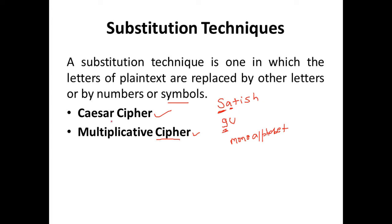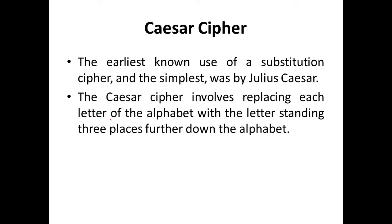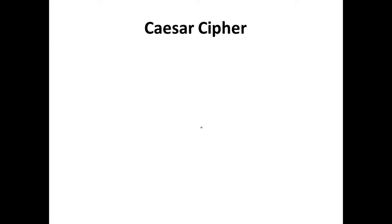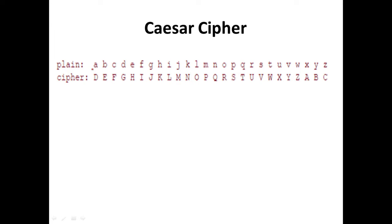Let's take a look at Caesar cipher first. This is the earliest known cipher and it was used by Julius Caesar. It's a very simple technique — the Caesar cipher involves replacing each letter of the alphabet with a letter standing three places further down the alphabet. So if your plain text contains the alphabet A, we go three characters down — one, two, three — and substitute A as D.